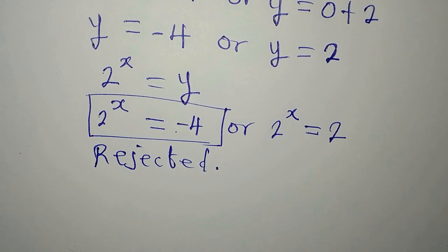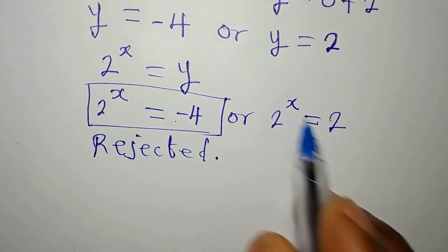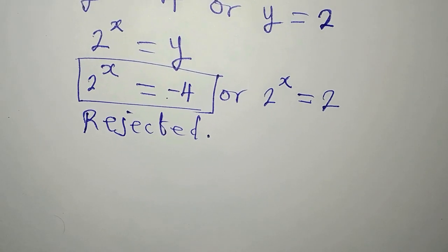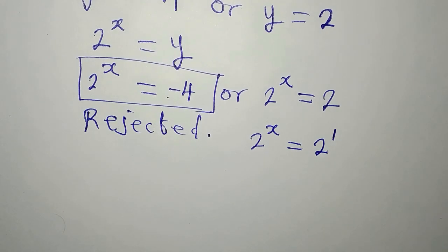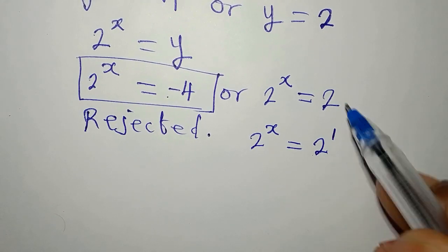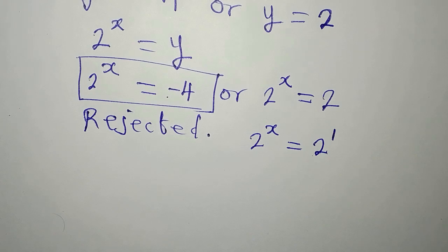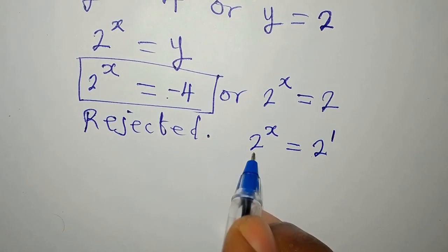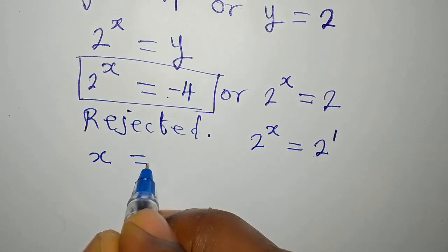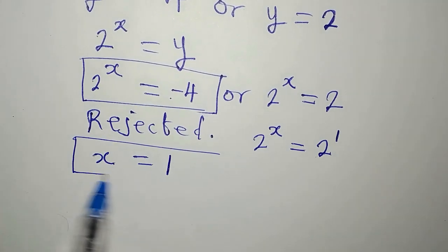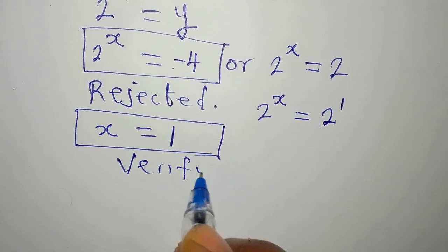So we reject 2^x = -4 and move to 2^x = 2. Since 2 = 2^1, and the bases are the same on both sides, the powers must be equal. Therefore x = 1.